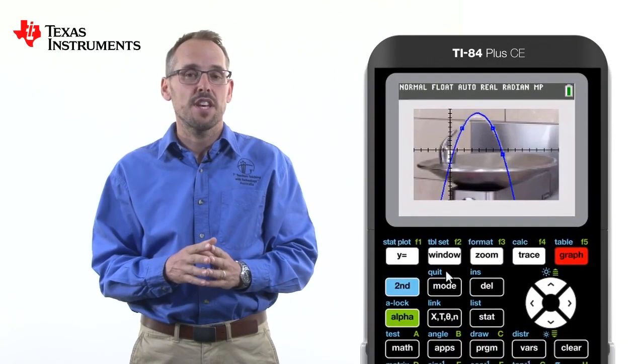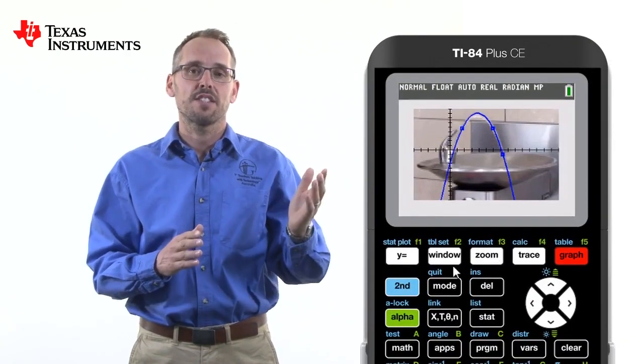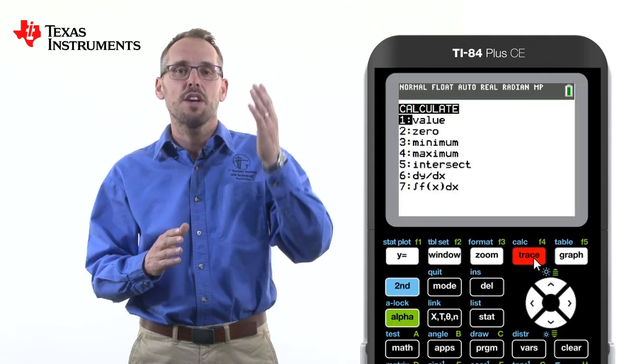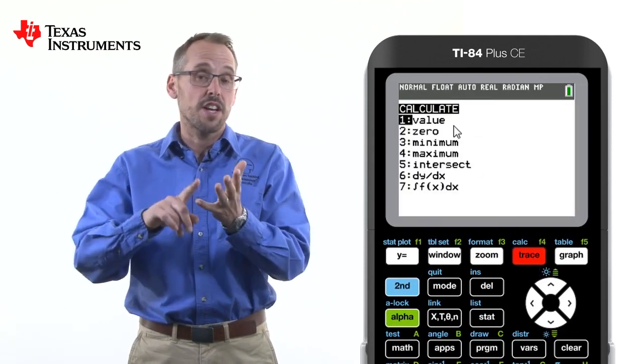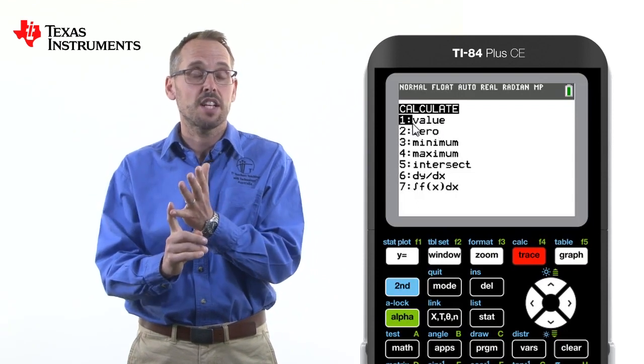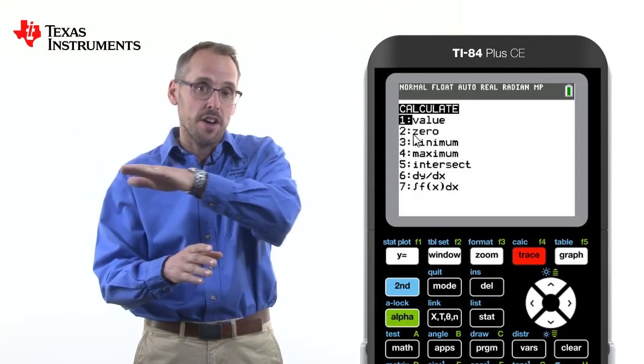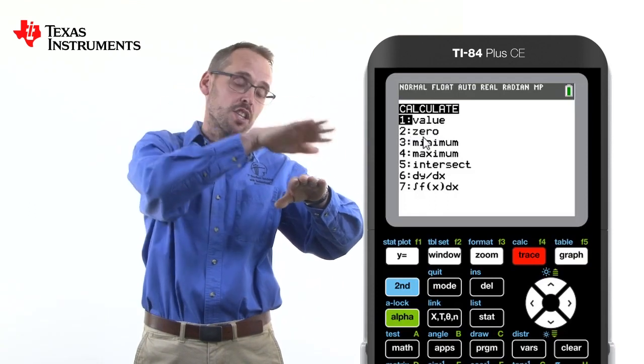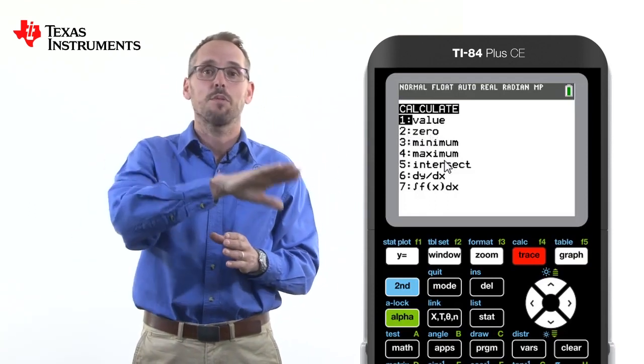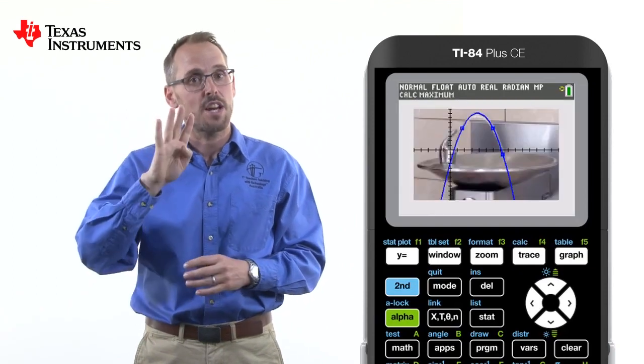But wouldn't it be fantastic if we could analyze that curve? Well, we can. To do this, we go into second trace. This allows us to find various values of significance. We could find an x value at a particular point on the curve. We could find the zero where the spout touches the x-axis again. But we're going to focus on finding the maximum. For this, we press number four.